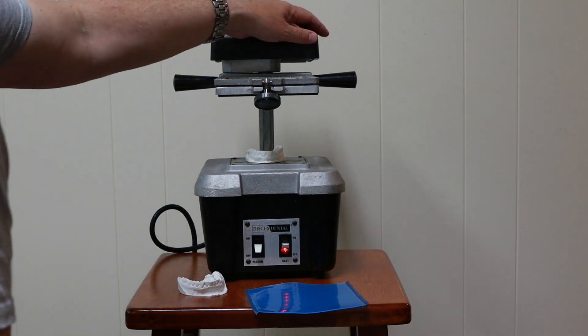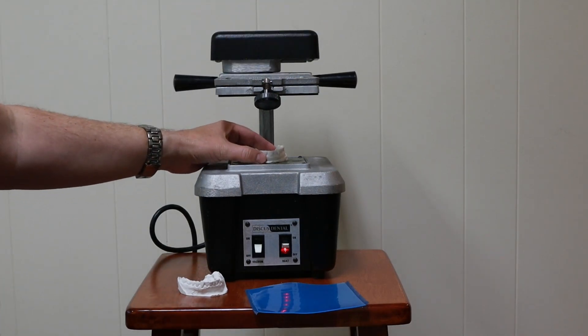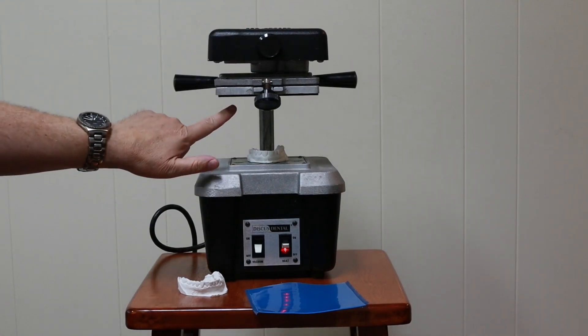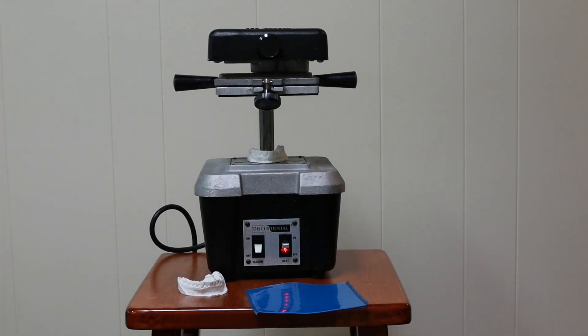Let's put the tray there. Let's put the model here. Let's rotate the heating element. And now we're just going to wait for the material to start to sag. I like to see about an inch sag and then I know it's sufficiently warm enough to vacuum form.